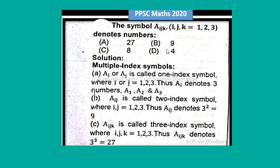I am saying that is the symbol A_i,j,k where i, j, k is equal to 1 to 3, denotes the numbers. Solution: multiple indexed symbols.